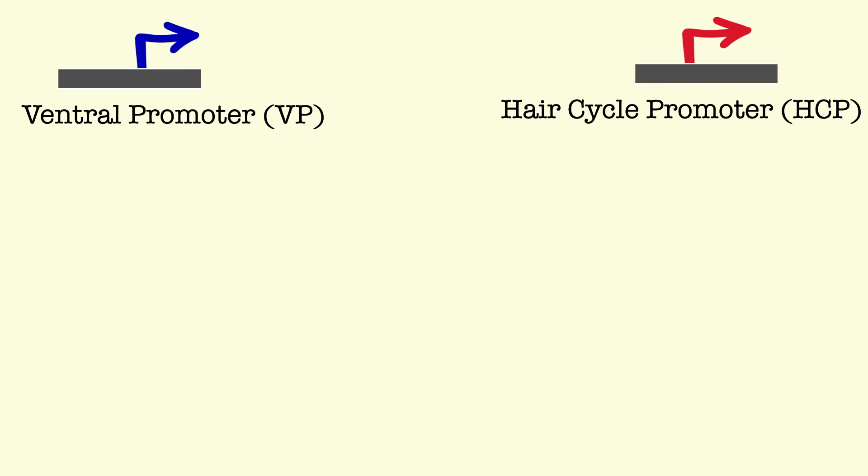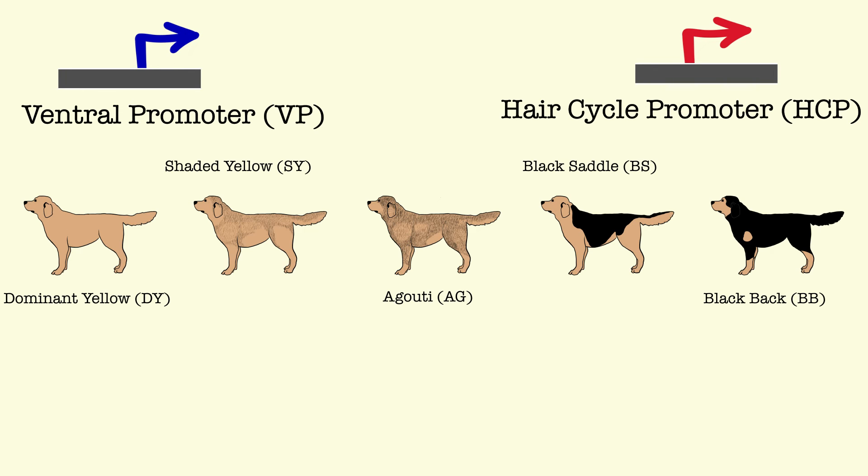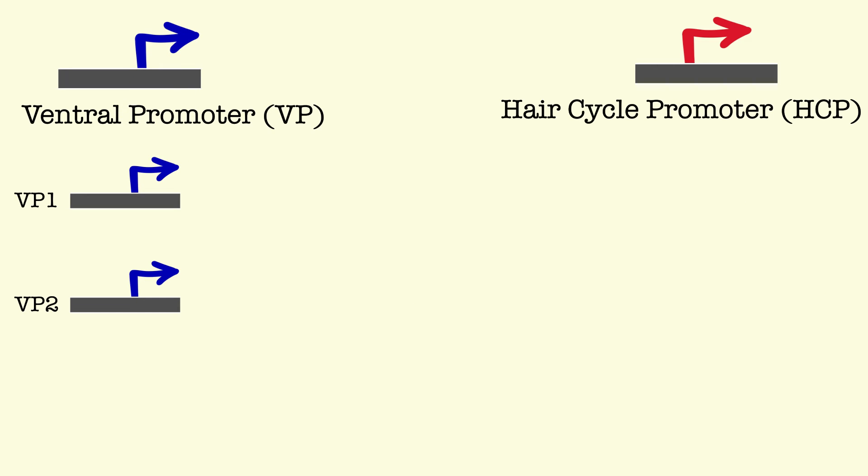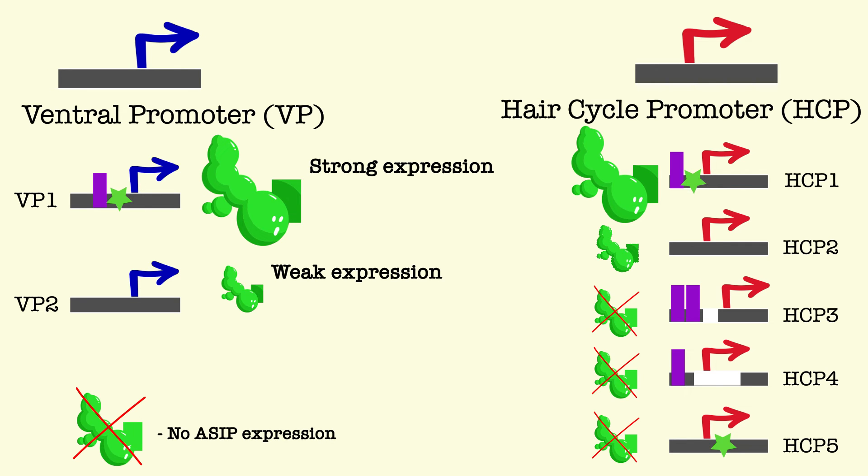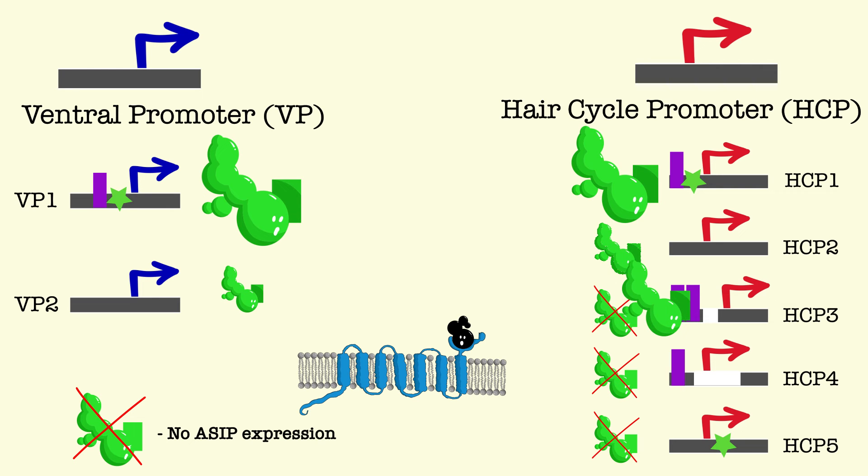In comparing the ASIP locus of dogs from the five pigmentation patterns, the researchers isolated two ventral promoter variants and five hair cycle promoter variants. Each promoter variant had differences in the DNA sequence, mostly polynucleotide expansions and SINE insertions, while deletions were observed in hair cycle promoter 3 and 4. Due to these differences, each promoter was of different strength in expressing ASIP, and given ASIP binds dominantly over MSH, stronger strength promoters were dominant over lower strength promoters.